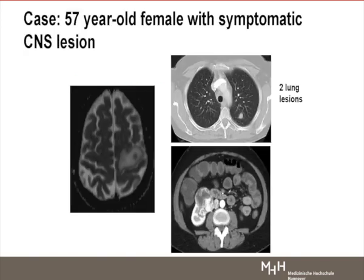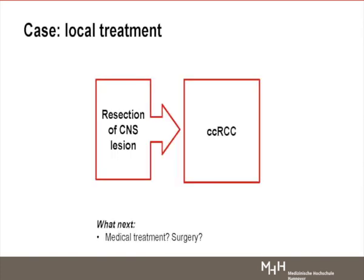This is a case from my patients treated a couple of years ago. This is somebody who presented with a CNS lesion, two lung lesions, and a renal mass. This was symptomatic CNS metastasis, so we took it out, and it showed clear-cell histology. Then we debated: do you do surgery, medical treatment, or no treatment? Because in the past, we took out the kidney.